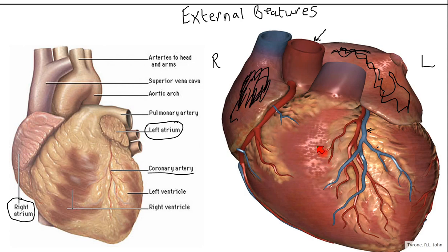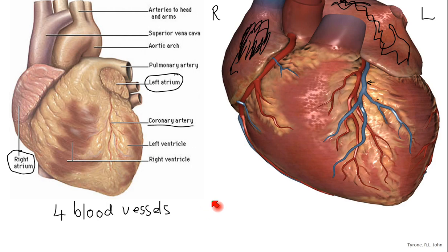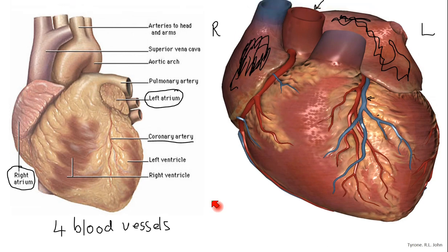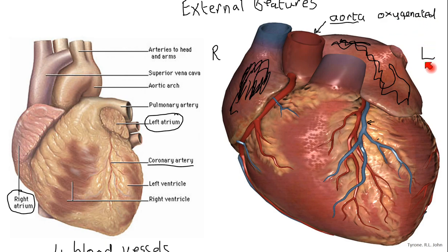We've got the coronary circulatory system. What we need to look at now are the blood vessels attached to the heart. There are actually four blood vessels attached to the heart. You need to know their names, whether they carry oxygenated or deoxygenated blood, and where they transport blood to and from. Using the 3D image, this vessel here is something called the aorta - it's the major artery in the body. It carries oxygenated blood, and because it's got oxygenated blood, it's actually part of the left side of the heart.